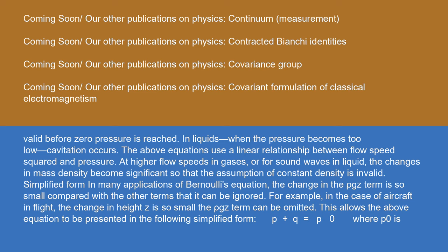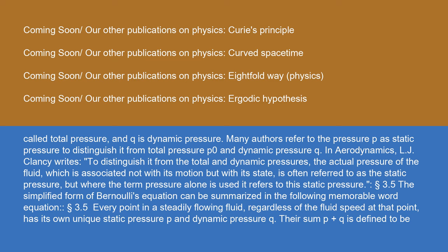In many applications of Bernoulli's equation, the change in the ρgz term is so small compared with the other terms that it can be ignored. For example, in the case of aircraft in flight, the change in height z is so small that the ρgz term can be omitted. This allows the equation to be presented in the simplified form: p + q = p₀, where p₀ is called total pressure and q is dynamic pressure.